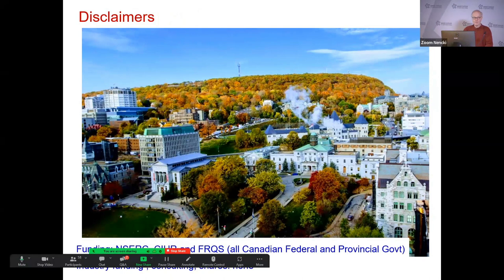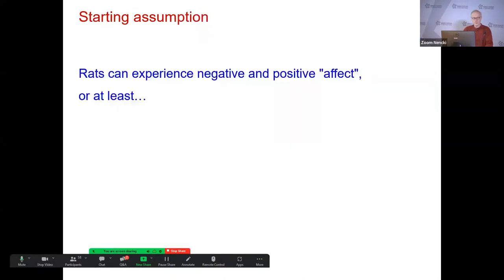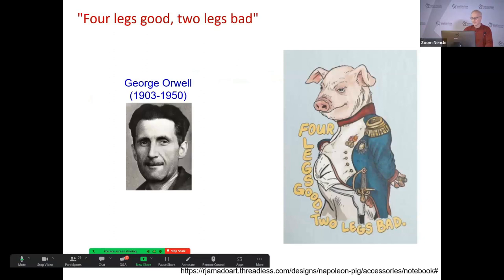I have no conflicts of interest that I know about. I'm going to assume that rats do experience positive and negative affect, whatever that means, to the extent that it's interesting to study and potentially useful. My lab is interested in trying to develop USVs as a measure of depressive-like behavior. We're not there yet, but that's the area I want to go into.